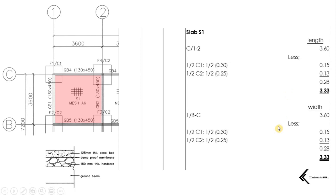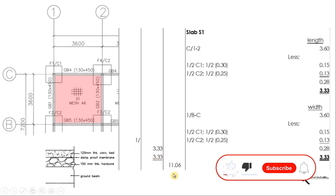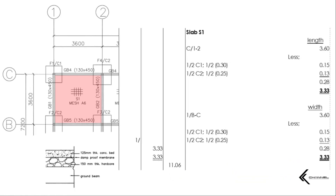Length dah dapat, width dah dapat. Sekarang kita akan kirakan keluasan yang terlibat. Mulakan dengan kuantiti bagi S1 — memandangkan kita hanya ada S1 ini satu sahaja, tuliskan 1 di sini. 3.3 meter untuk length, 3.3 meter untuk width. Darabkan: 1 × 3.3 × 3.3 dan kita dapat 11.02 meter square bagi hardcore dan juga damp proof membrane yang terlibat.